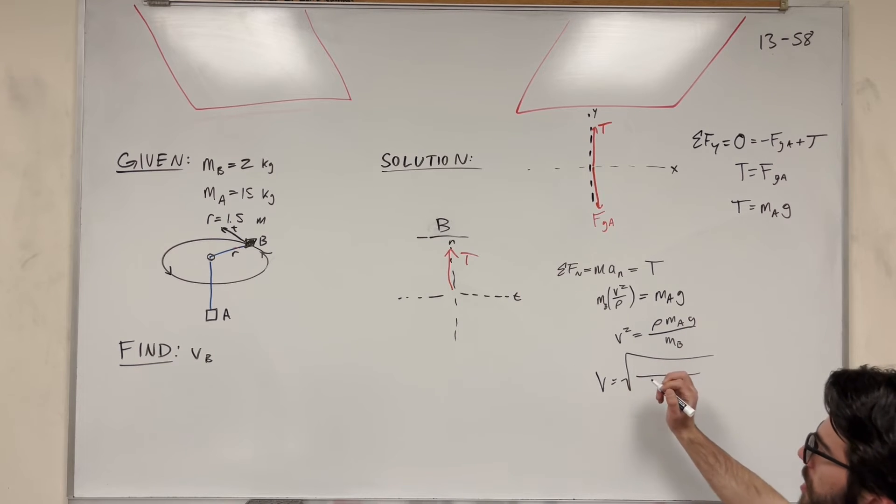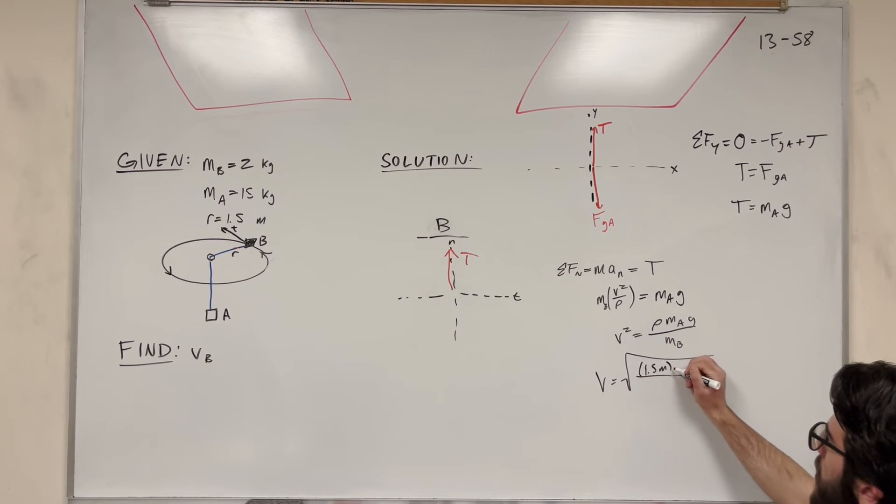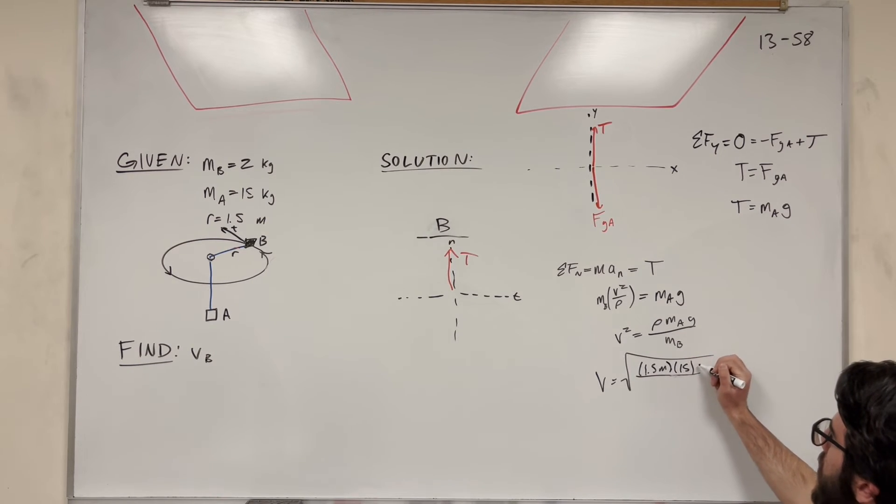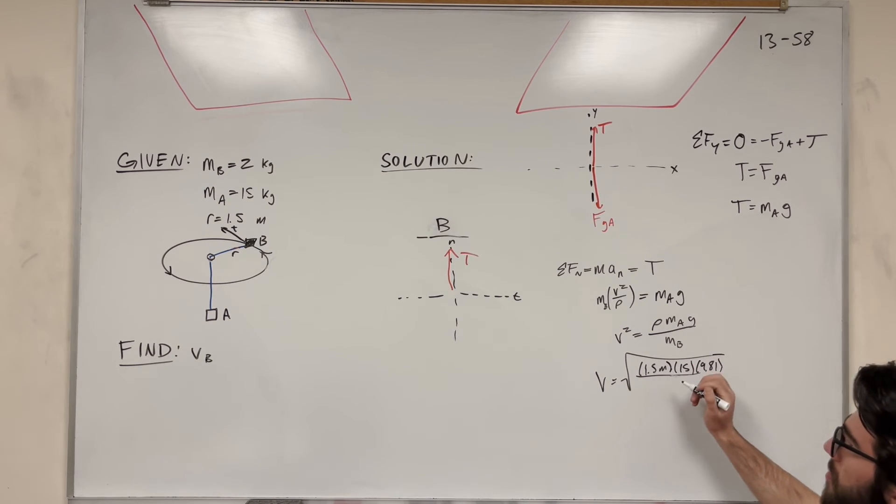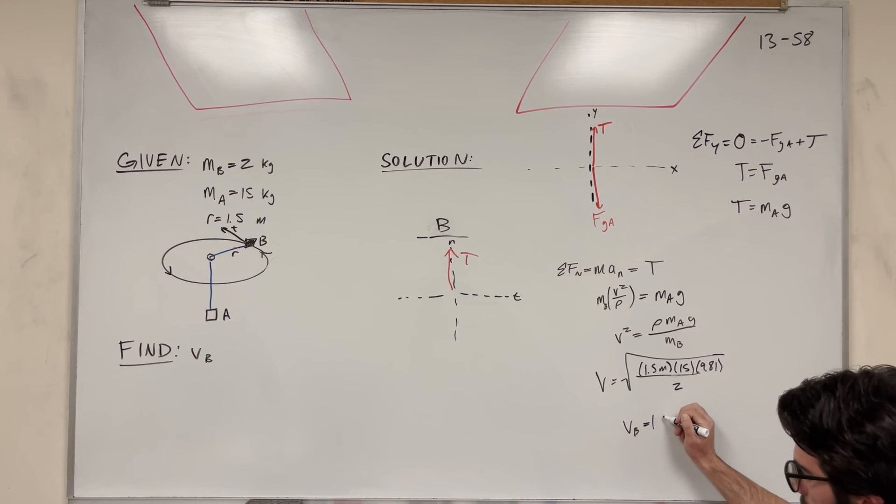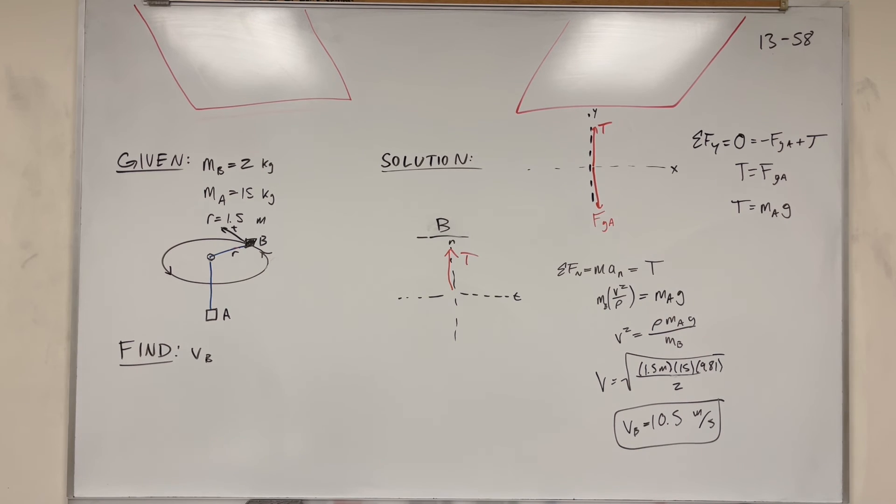So let's do the square root. Radius of curvature is 1.5 meters because that's the radius of the rope on that table. Mass of A is 15 kilograms. Gravity is 9.81. And mass of B is 2. So solve for this. You get that it needs to be traveling 10.5 meters a second in that circle in order to complete this. So there you go. That's how you solve this problem.